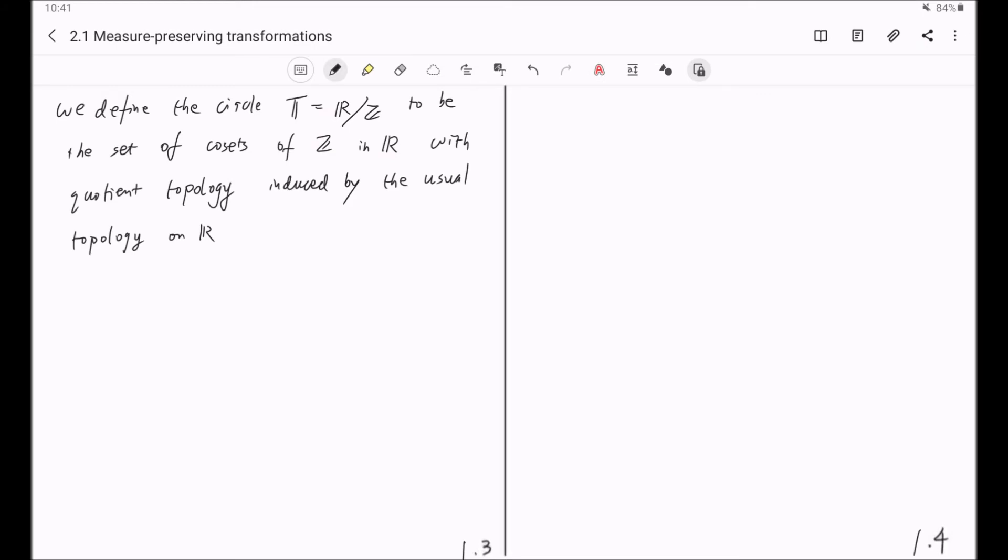And you can see this topology can be given by the following metric. If you consider the coset r + Z and the coset s + Z, you can define the distance between those two points to be the minimum of the absolute value of r - s + m where m ranges over Z.